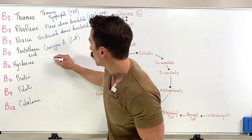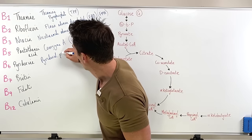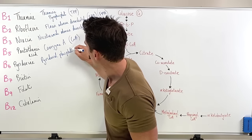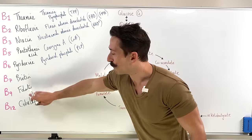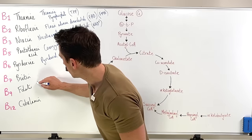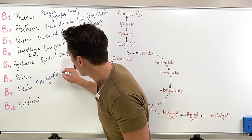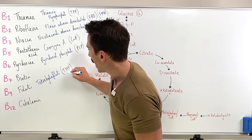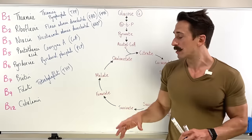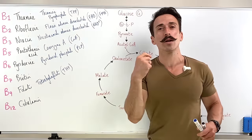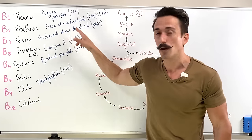Pyridoxine works as pyridoxal phosphate, also known as PLP. Biotin works as biotin. Folate works as tetrahydrofolate, known as THF. And cobalamin works as cobalamin. The reason I'm telling you this is because the way these vitamins fit into biochemical processes is as these active forms — and if you want to know more, googling 'B1' won't give you much, but searching these active form names will give you heaps of information.